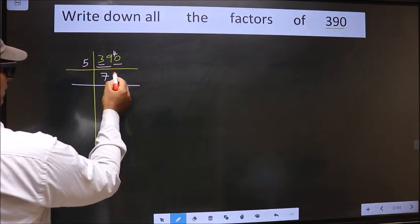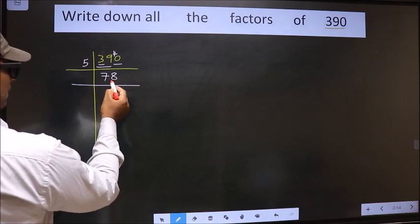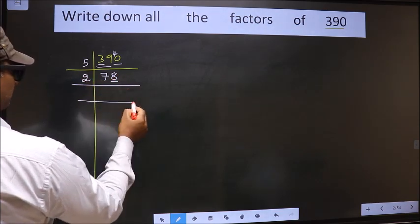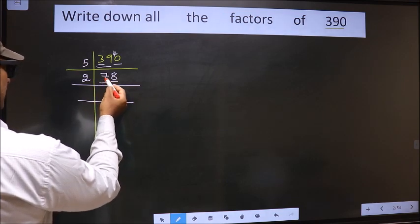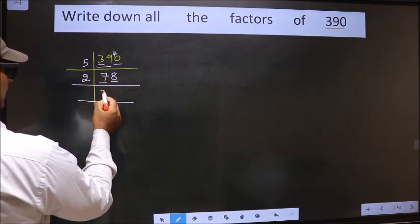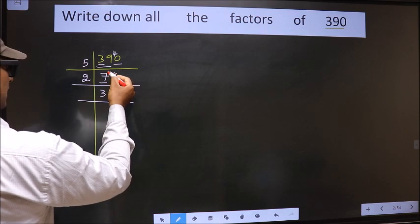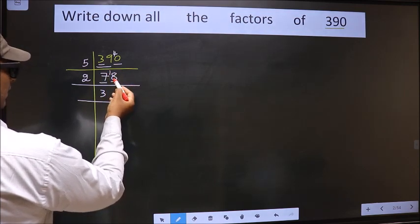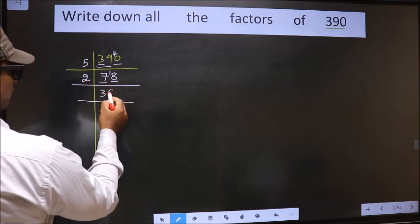When do we get 40 in 5 table? 5 8s 40. Now here last digit 8 even, so we take 2 here. The first number 7, a number close to 7 in 2 table is 2 3 6. 7 minus 6 1, 1 carried forward making it 18. When do we get 18 in 2 table? 2 9s 18.